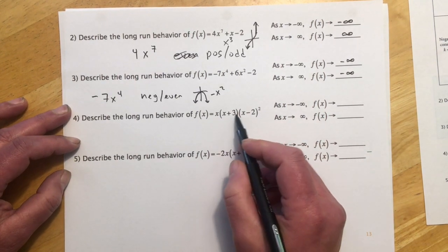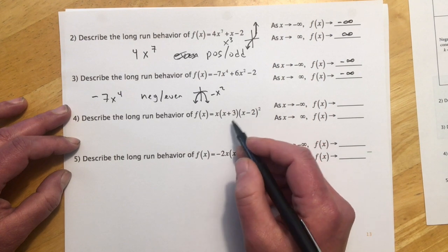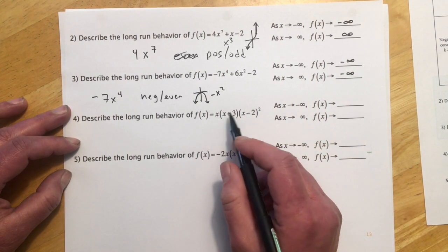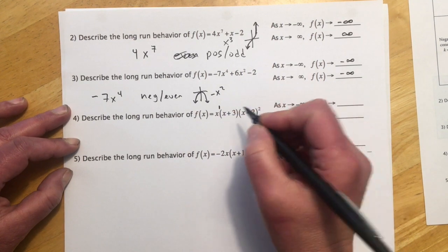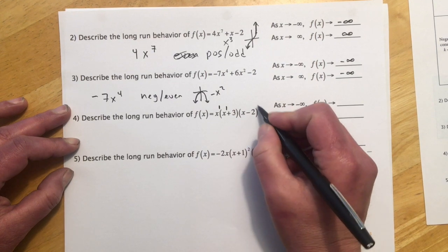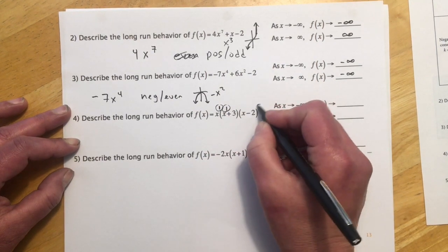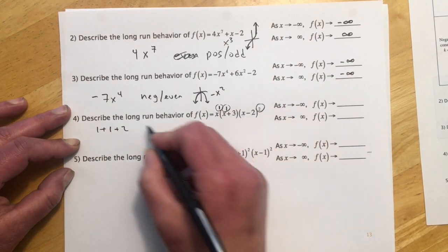Here this is a little bit different because it's in factored form, so I have to figure out what the leading term would have been if I multiplied it all out. And we absolutely do not want to multiply it all out because that's too much work. Right here we have x to the first, right here we have x to the first, right here we'd have an x squared, so if you add those up, 1 plus 1 plus 2, so I'm just adding up all of the powers of x, that's going to be a 4.